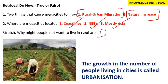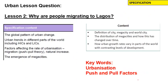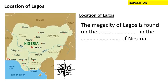Just to recap, the growth in the number of people living in cities is called urbanization. Let's begin. Lesson two: why are people migrating to Lagos? This lesson is useful for all GCSE specifications — AQA, where we need to look at megacities and push and pull migration theory, and the same for OCR, Edexcel and other boards. Let's begin by looking at the location of Lagos.